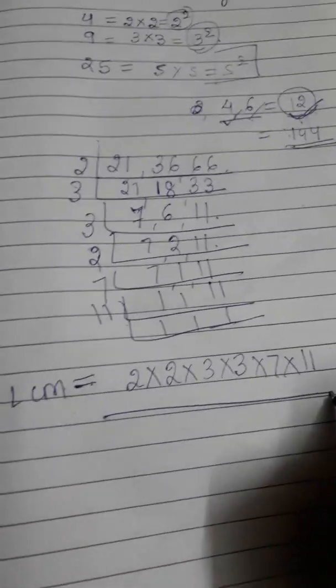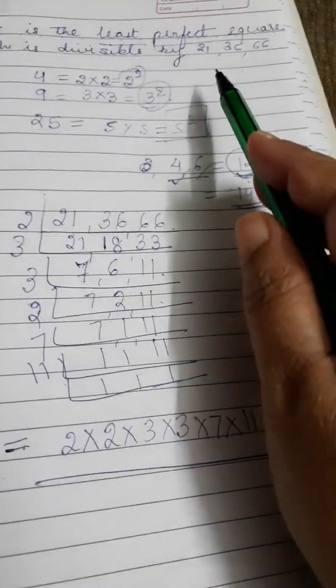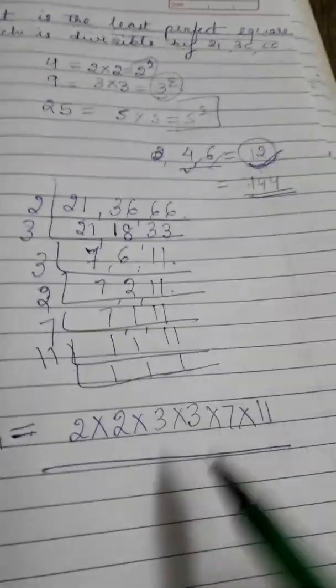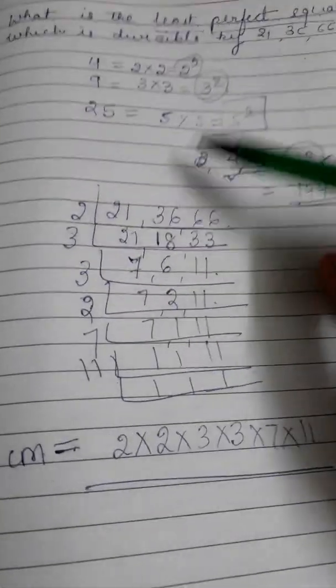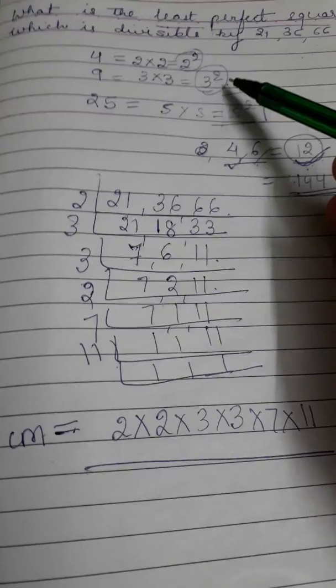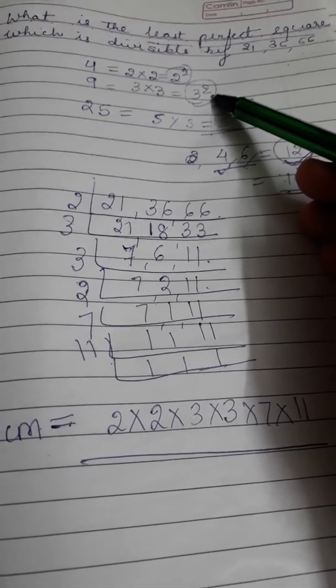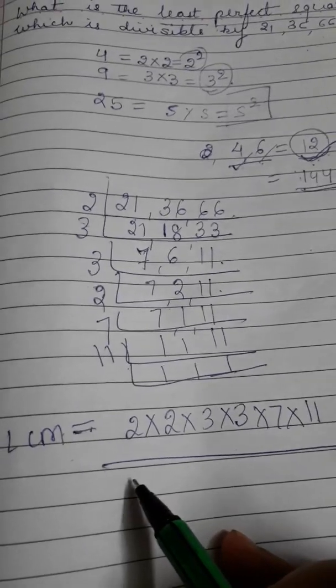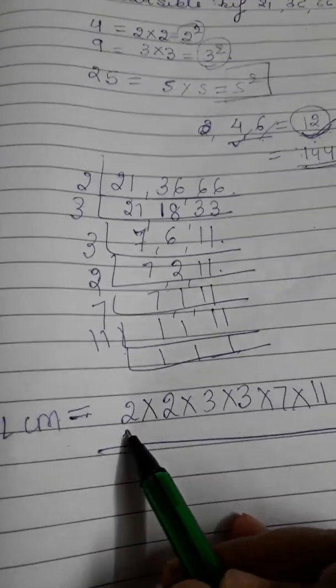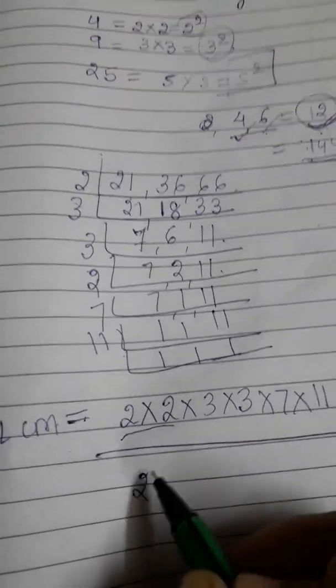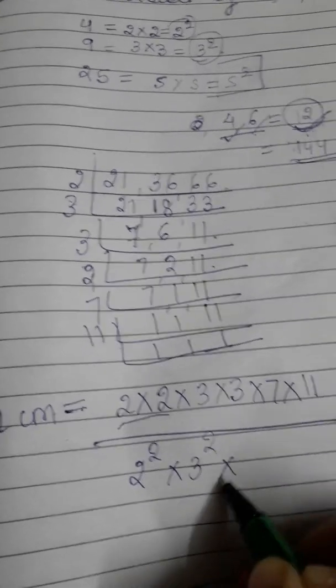Now this is the least common multiple which will be divisible by 21, 36, and 66. I told you the square number should have the index power as square. So 2 is already in the square form. 3 is in the square form.